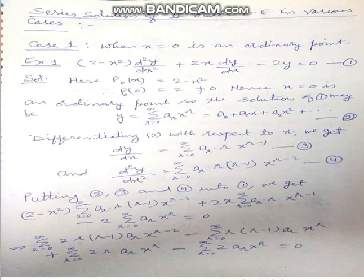Now we come to the method of solving the second order differential equation by the series solution method. We discuss Case 1: when x = 0 is an ordinary point. We take the example: (2 − x²) d²y/dx² + 2x dy/dx − 2y = 0. Clearly p0(x) = 2 − x². When x = 0, p0 = 2, which is non-zero. Therefore x = 0 is an ordinary point, and the solution is y = Σ aᵣ xʳ.